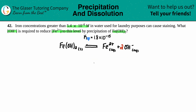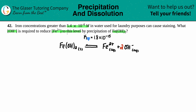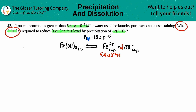Did they tell us any starting concentrations for iron or hydroxide? They said we want to reduce the Fe²⁺ concentration to 5.4×10⁻⁶ molarity — so that is the concentration of the iron(II) ion. For the hydroxide, the question asks what concentration of OH⁻ is required, so I don't know that value yet.